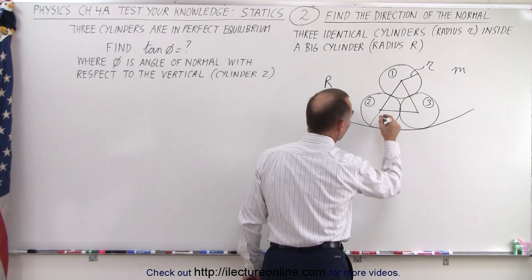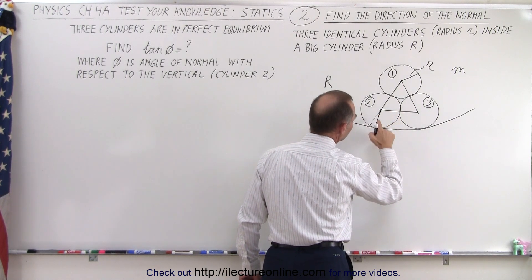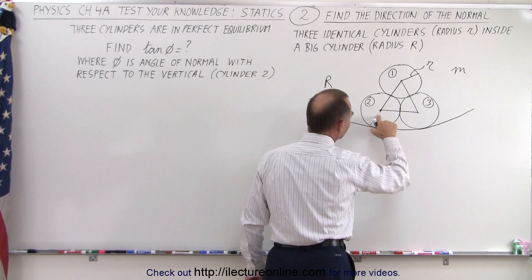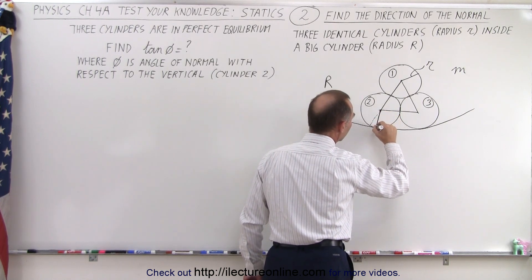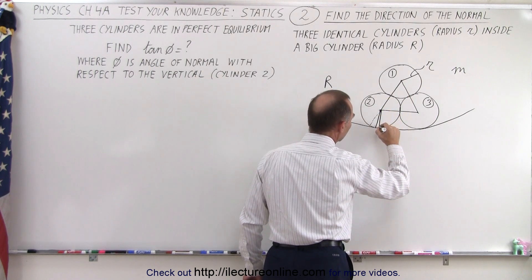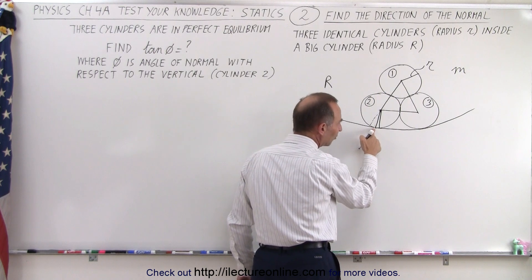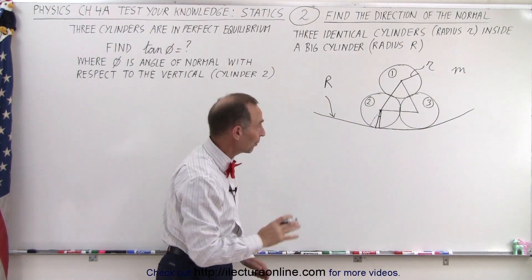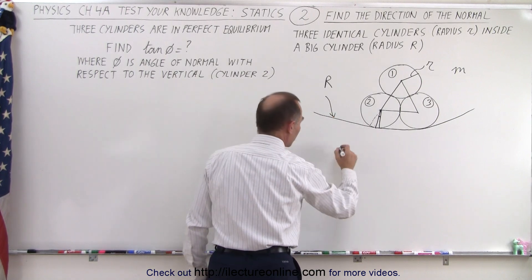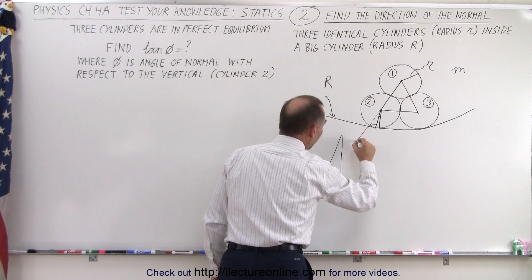What we need to do then is draw a different triangle, draw a triangle like this. So you can see here that the bottom cylinder actually touches the big cylinder at this location, and we're looking for this angle right here. Now of course you can't see that very well, so we're going to redraw that triangle.